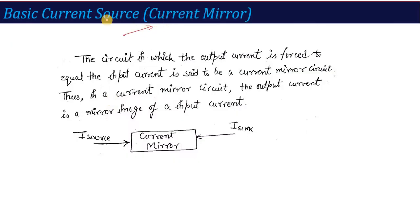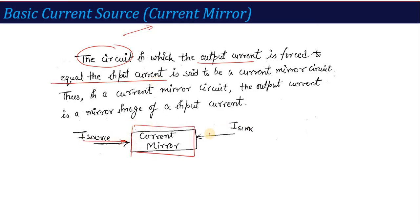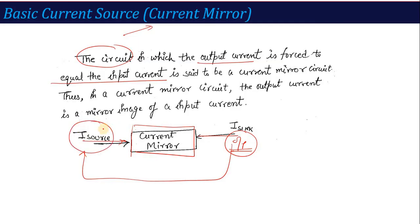Current mirror is called the basic current source. In this circuit, the output current is forced to equal the input current. You have a circuit in which you put an input current, and the output current will be equal to that input current. Basically, a mirror image is generated — the input side current is mirrored on the output side. That's why this type of circuit is called the current mirror circuit.